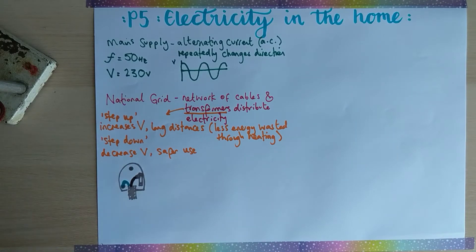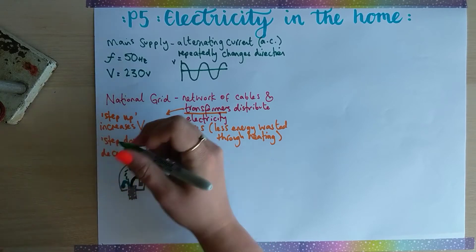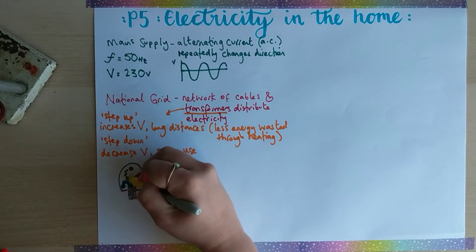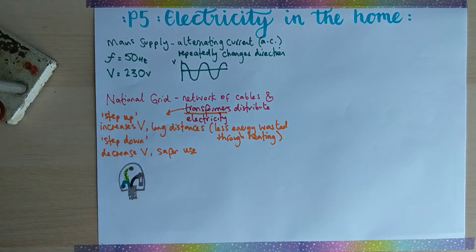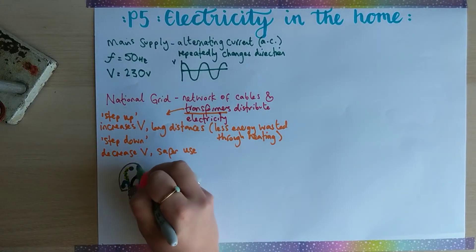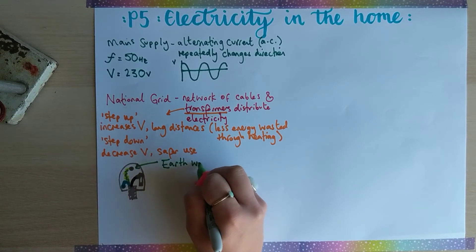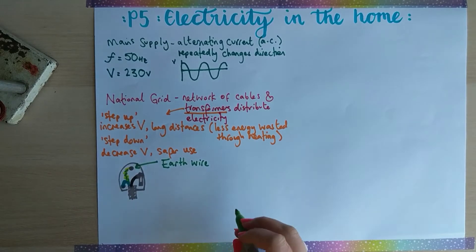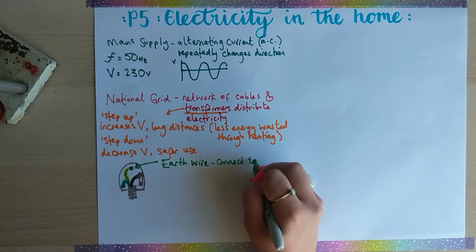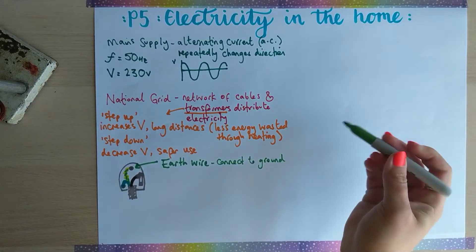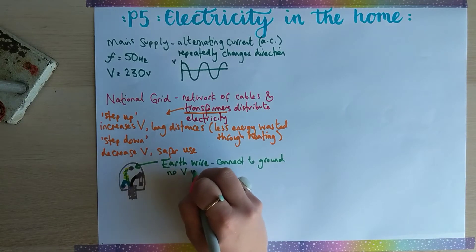The green and yellow striped wire goes to this top pin—it's the earth wire. The job of the earth is to connect it to the ground, and there's no potential difference unless there is a fault.